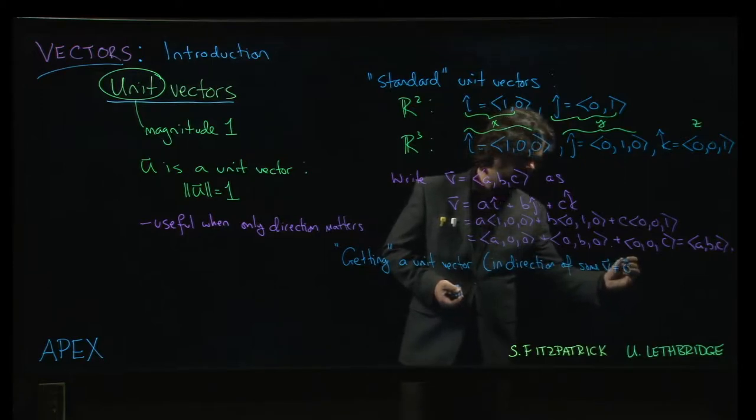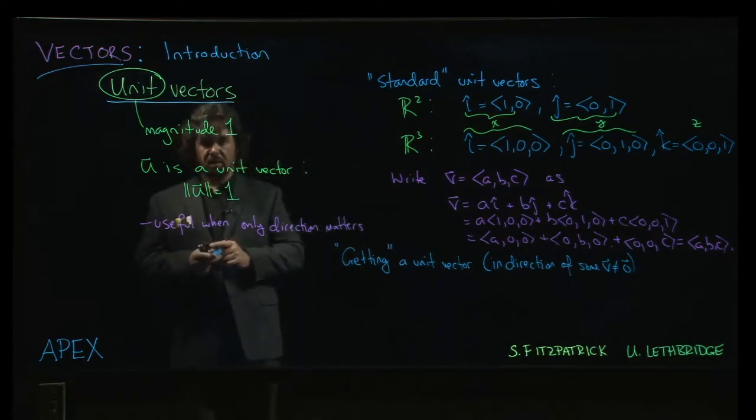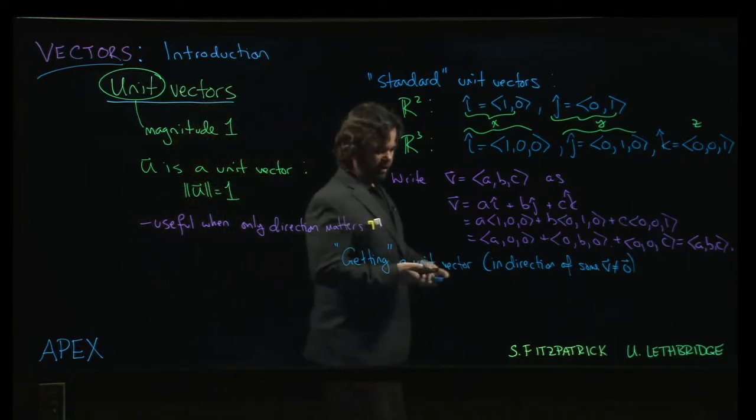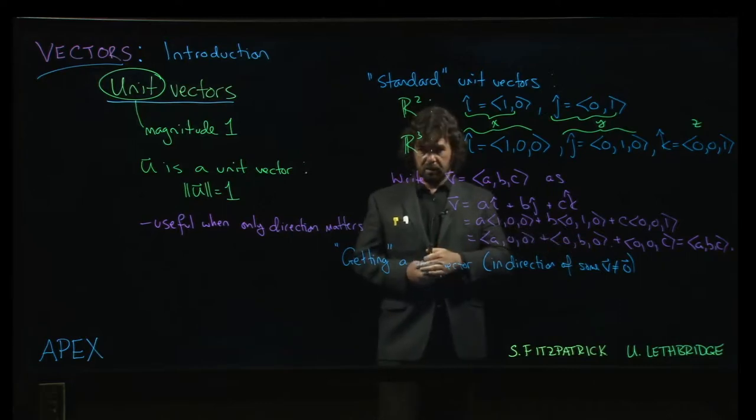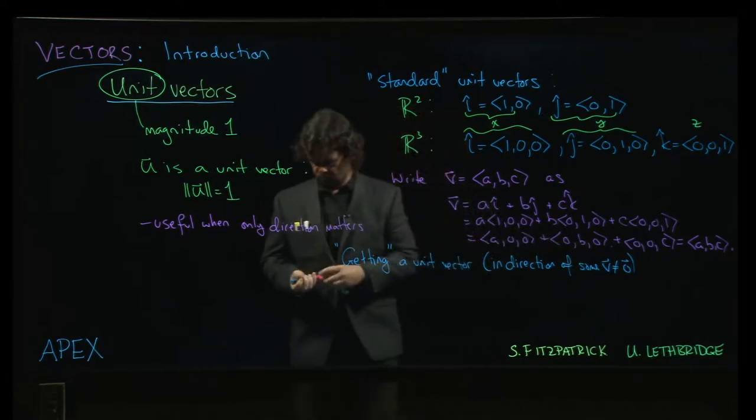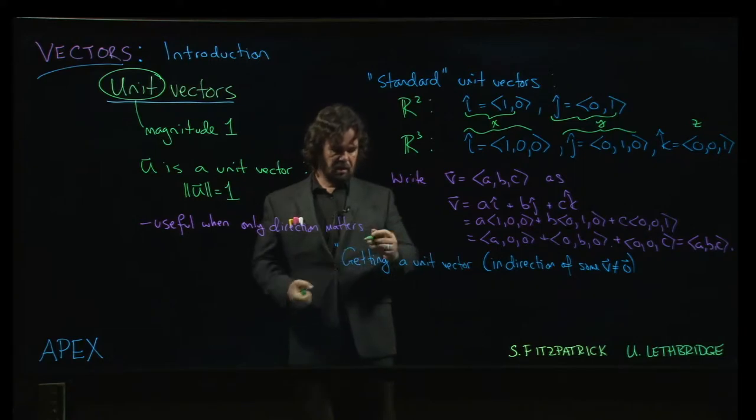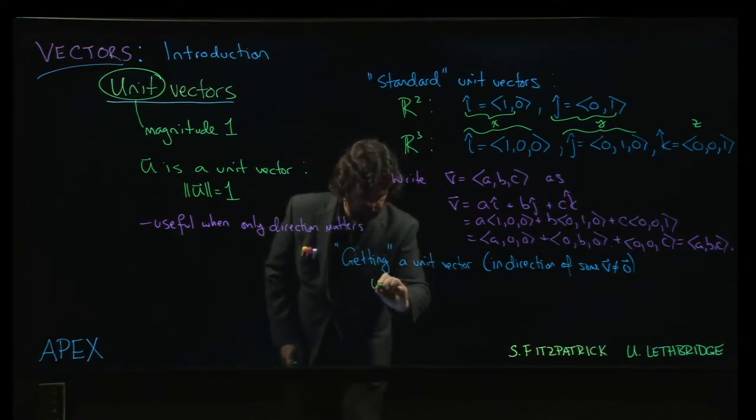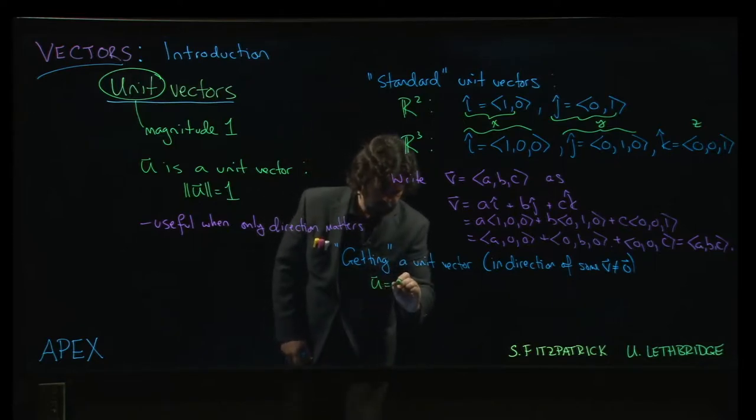And of course, it can't be the 0 vector, right? The 0 vector has no direction. It doesn't make sense to ask for a unit vector in the direction of the 0 vector. But for any other vector v, well, basically we want it to be in the same direction. And we've sort of seen that scalar multiplication changes the magnitude, but not the direction. And so we want some vector u, and it's going to be in the same direction as v. So it's going to be some scalar multiple of v.